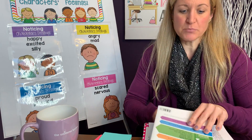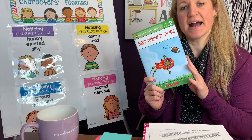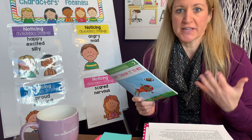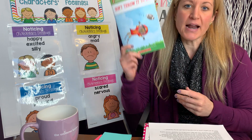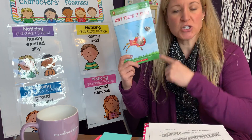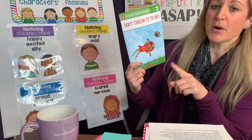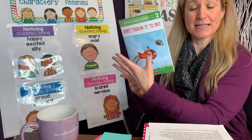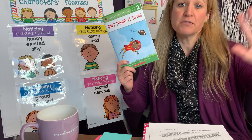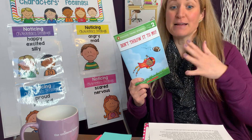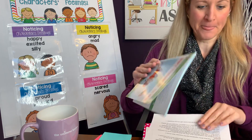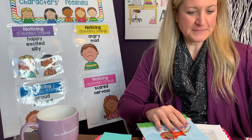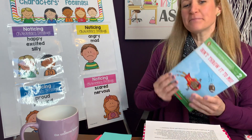Before we begin, it's important to note that you will need to have some sort of mentor text to use to refer to during this lesson. The example I'm going to use is this story right here — Don't Throw It to Mo. This is something I'm not going to read aloud to my students in its entirety; we already read it in a previous lesson, and I'm just coming back to refer to it. Let's go ahead and begin.